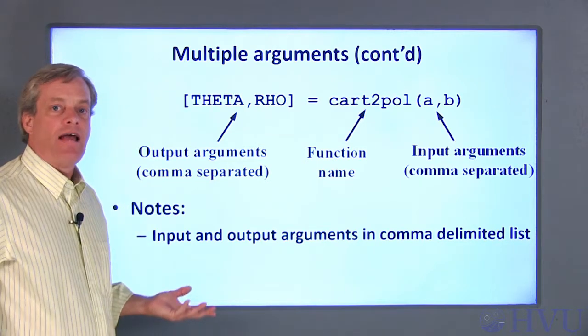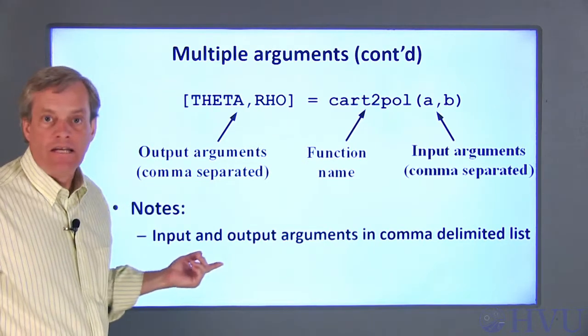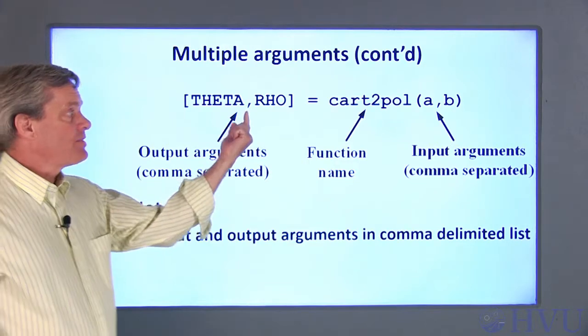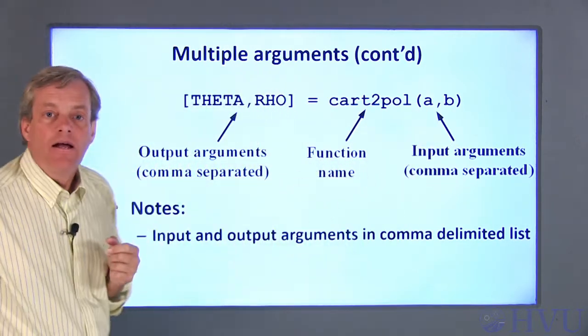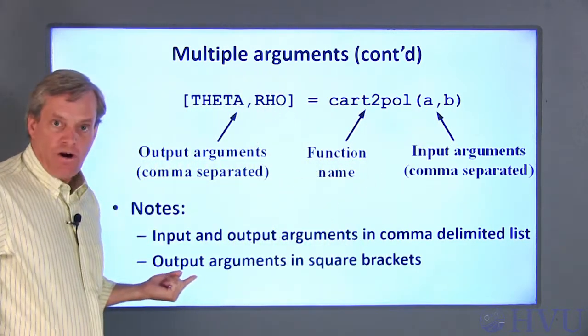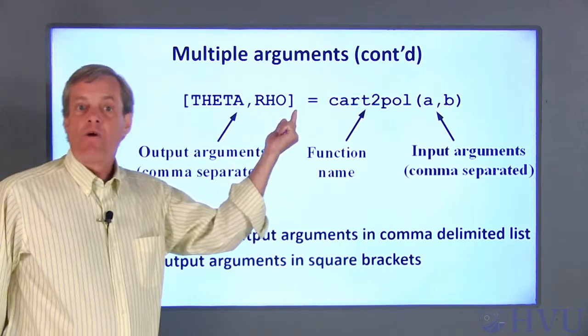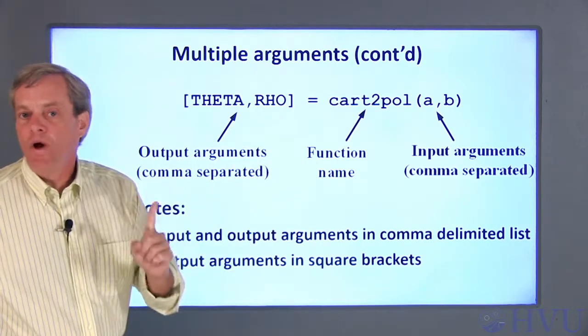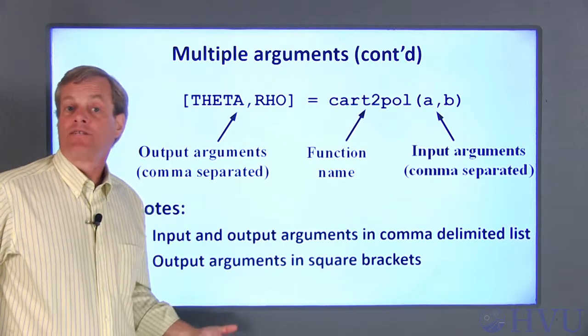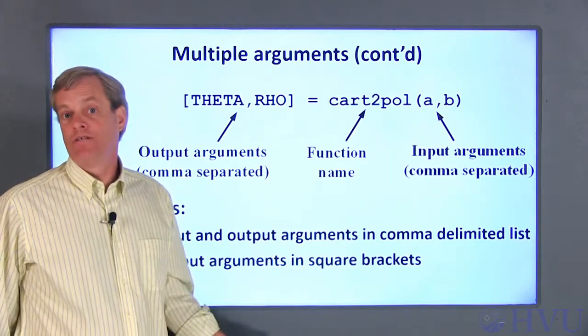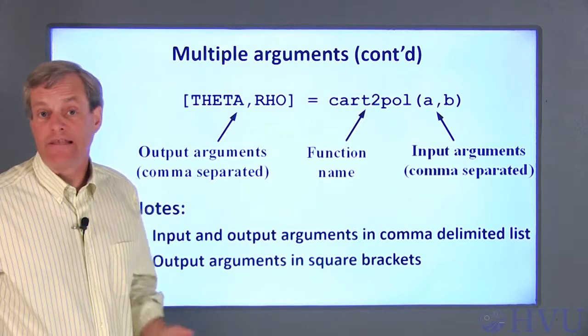There are a few details about this syntax that you should note. The input and output variables are provided in list form. The arguments are separated by commas. The output arguments are enclosed in square brackets. If there's only one output argument, the square brackets are optional. If you want to put brackets around a single output argument, though, it won't hurt anything.